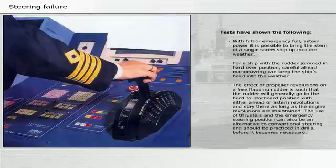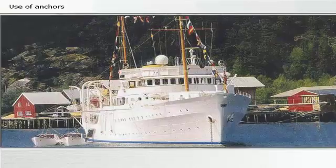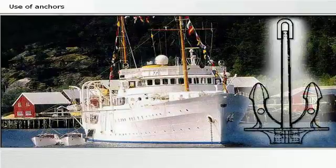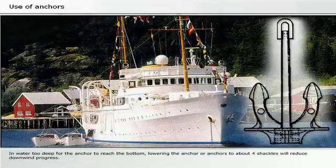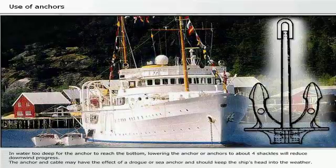The use of thrusters and the emergency steering position can also be an alternative to conventional steering and should be practised in drills before it becomes necessary. In water too deep for the anchor to reach the bottom, lowering the anchor or anchors to about four shackles will reduce downwind progress. The anchor and cable may have the effect of a drogue or sea anchor and should keep the ship's head into the weather.